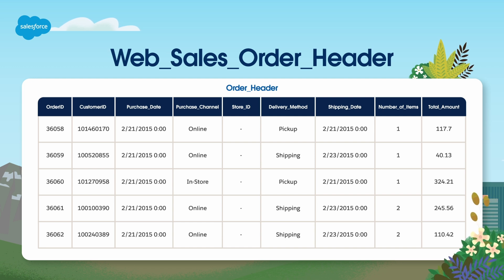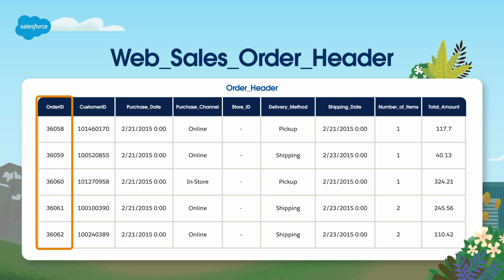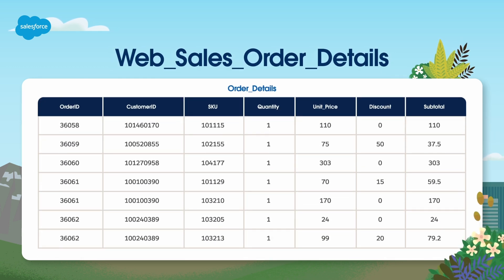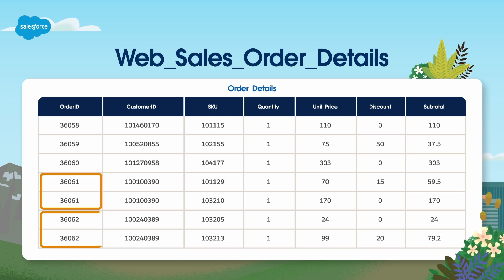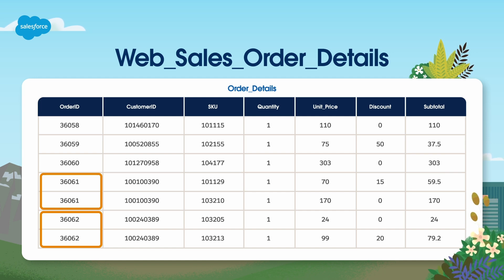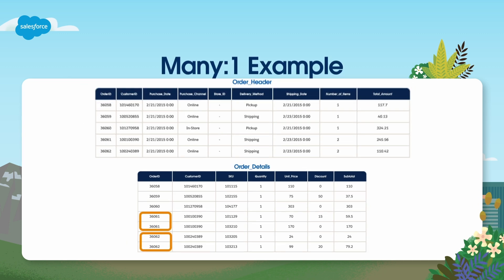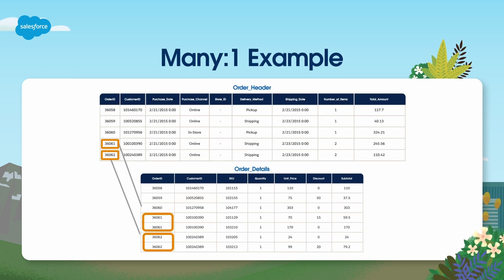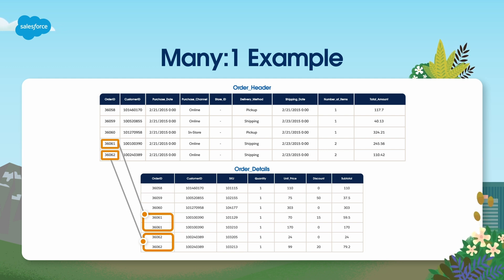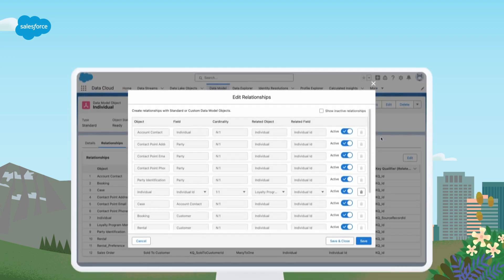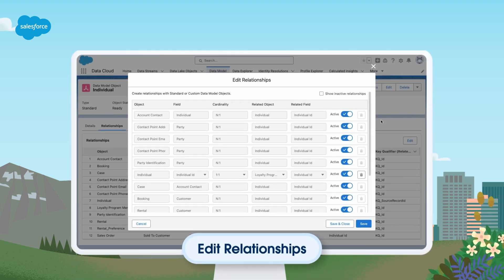To understand the relationships between objects, let's take a look at an example. First, we have the Web Sales Order Header Dataset. In this example, we can see that there are no repeat values in the Order ID column. This means that the Order ID is unique and could make a good primary key. Now, in the Web Sales Order Details Dataset, we can see there is also an Order ID column, but this time it has repeating values — 36061 and 36062 appear twice. This signifies that there are multiple products in those orders. If we wanted to establish a relationship between these two objects, we would use the Order ID field as the common thread in both datasets. Based on the observed behavior, we can conclude that Web Sales Order Details is many-to-one with Web Sales Order Header. Once we understand the relationship, the final step is to define it on the Relationships tab in the Data Model Object Record.